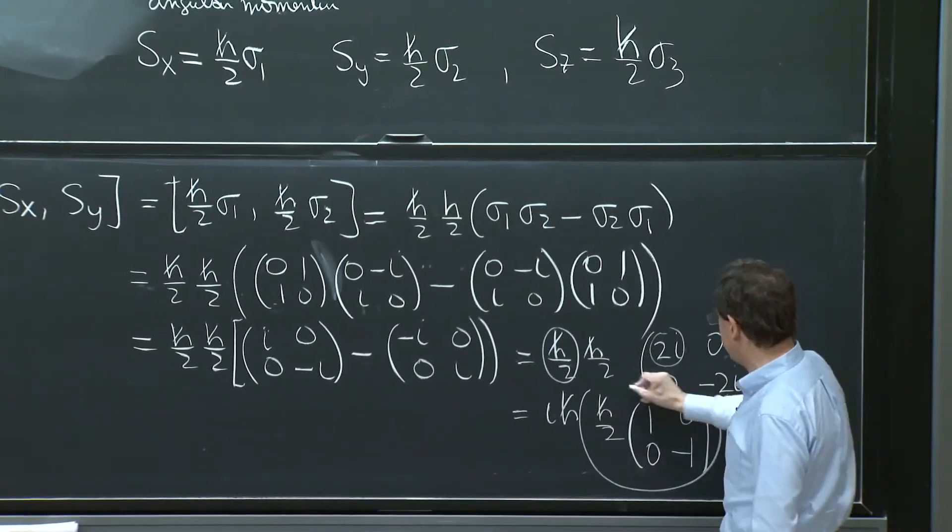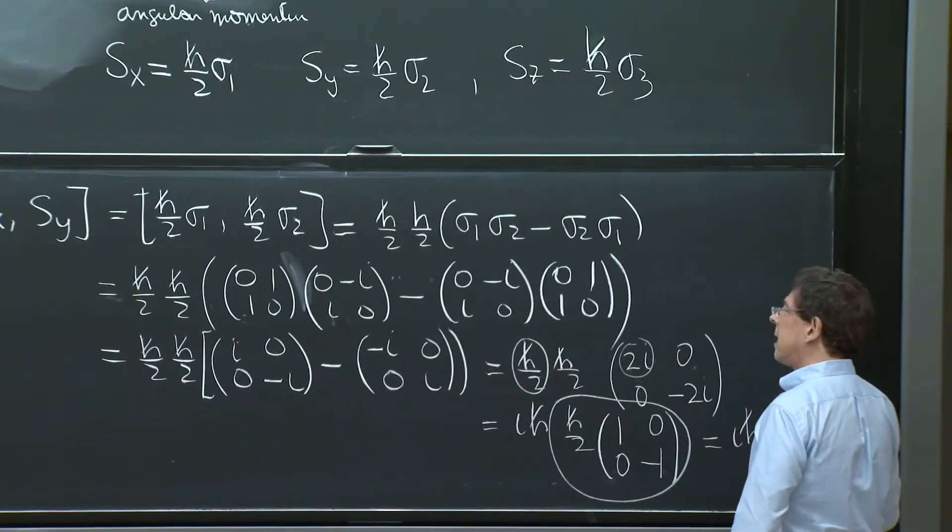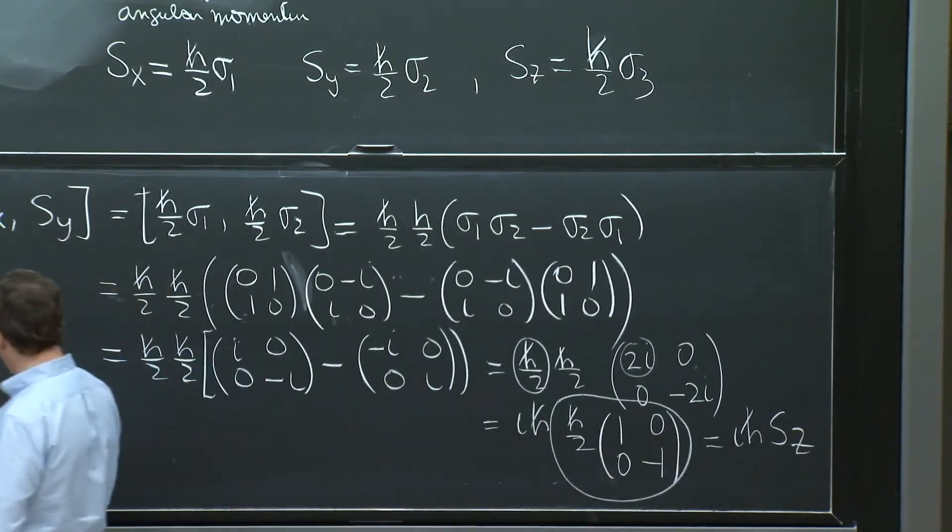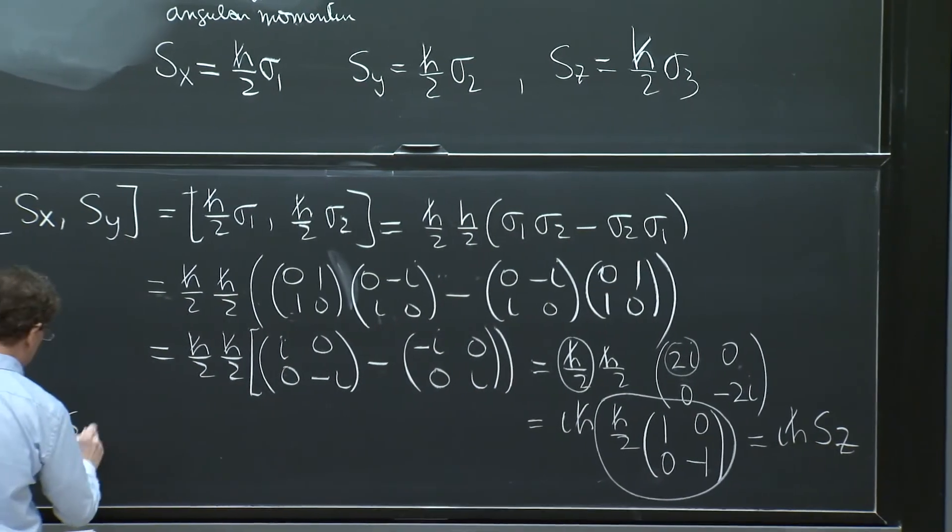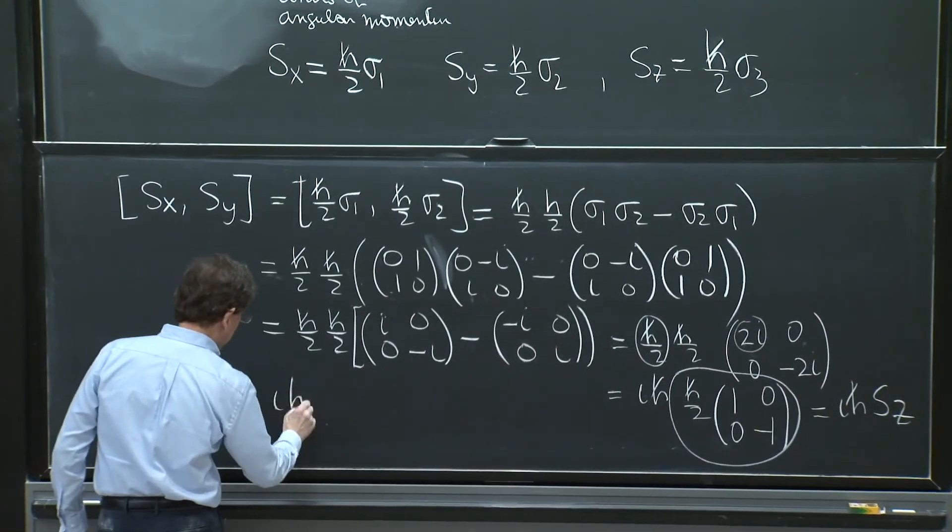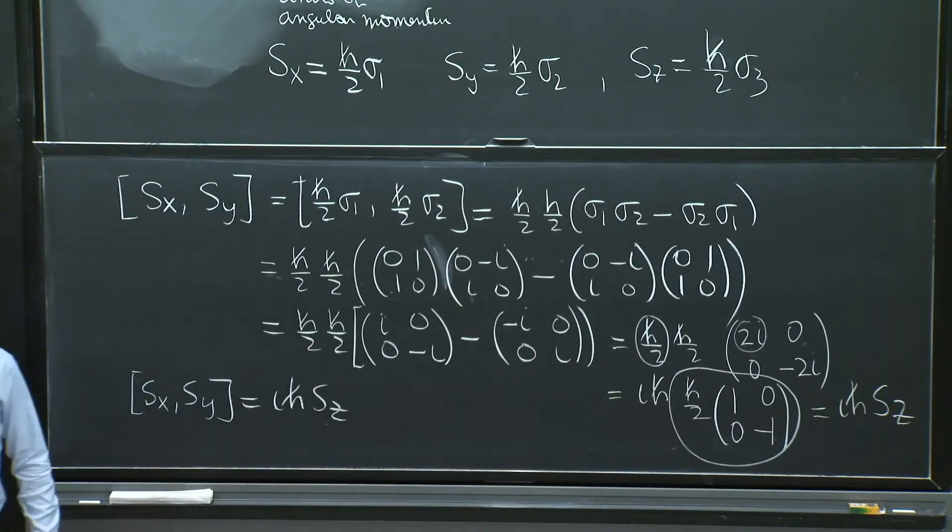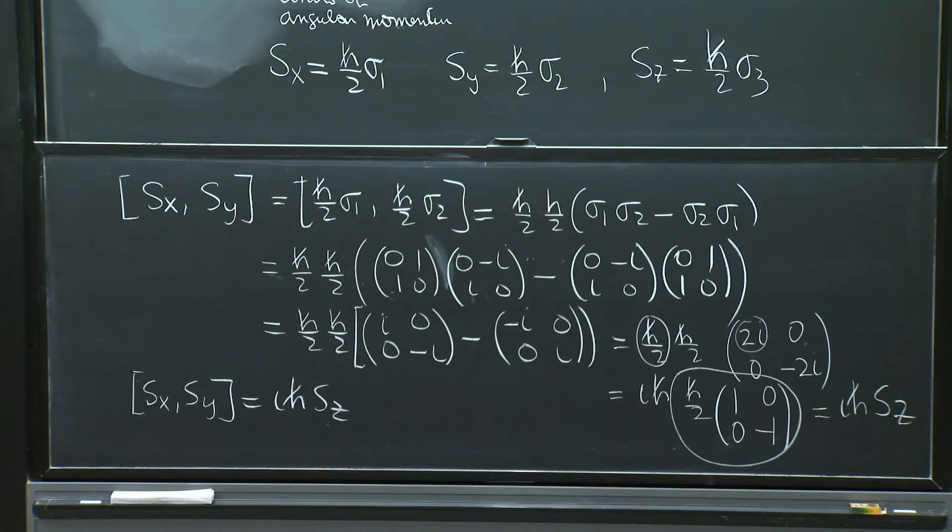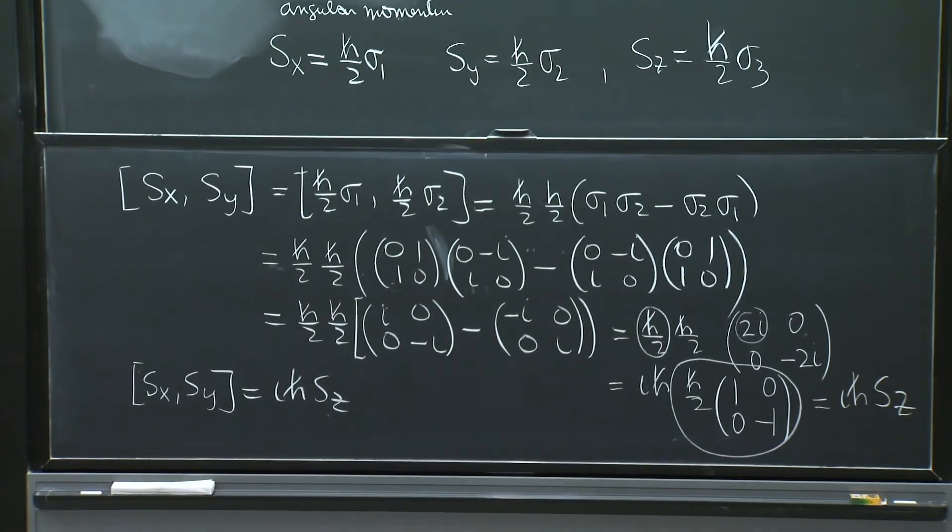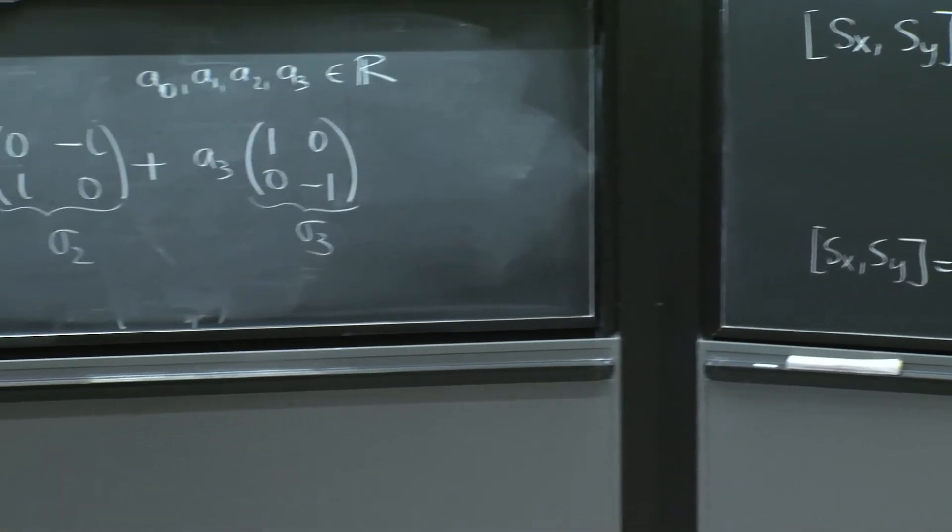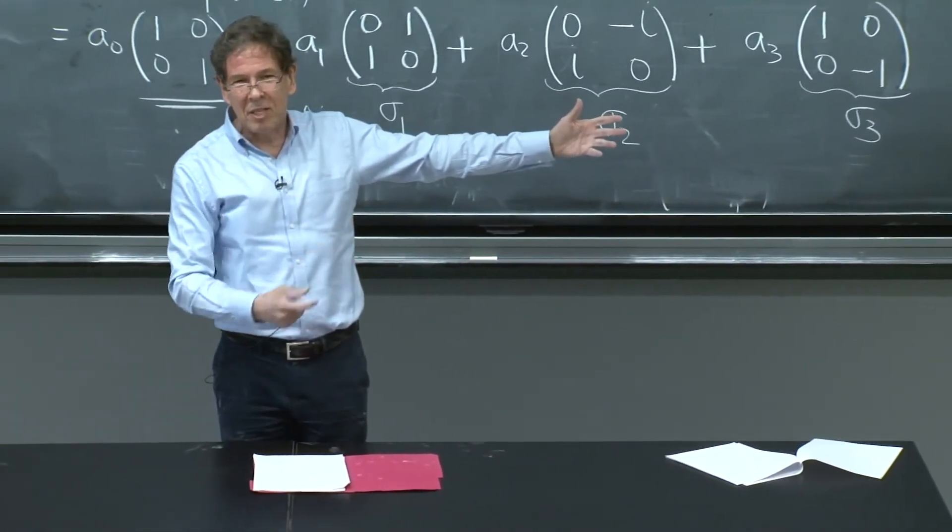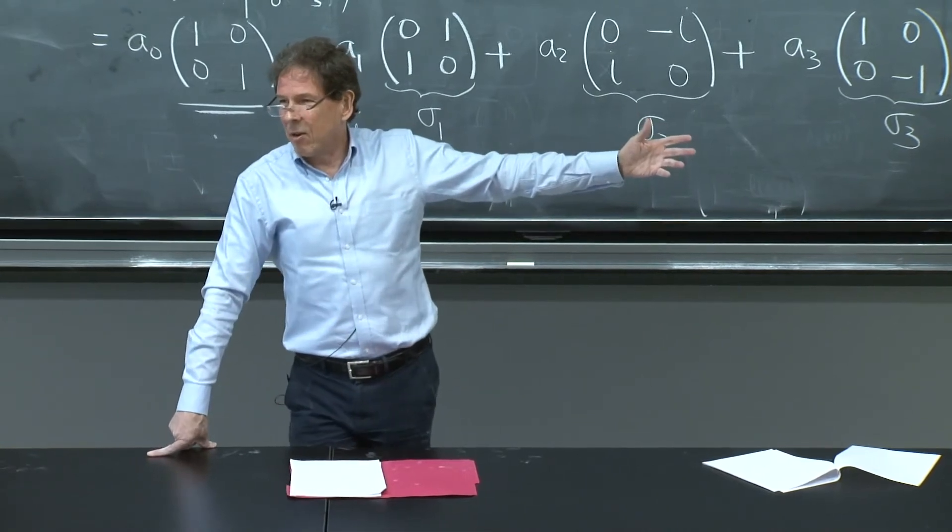So it's ih bar Sz. So this stuff, Sx, Sy, is giving you ih bar Sz. And that was exactly like angular momentum. So not only it has the units of angular momentum, it has the commutation relations of angular momentum. Hermitian operators, 2 by 2 matrices, they used to be R cross P, all these derivatives, complicated stuff. Here it is. With 2 by 2 matrices, you've constructed angular momentum.